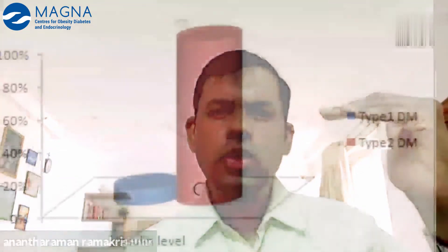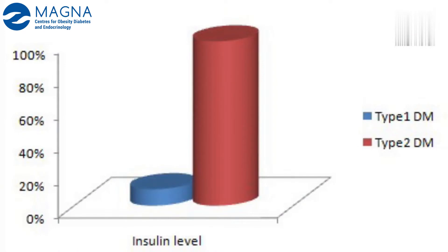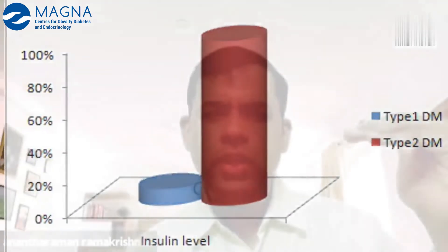Type 1 diabetes requires the use of insulin, unlike type 2 diabetes. Type 2 diabetes produces some insulin — about 3.5% compared to type 1 diabetes. For type 2 diabetes patients, insulin is already being produced. Type 1 diabetes patients have no insulin levels at all — it is zero.